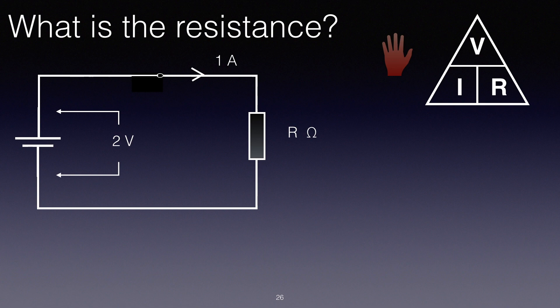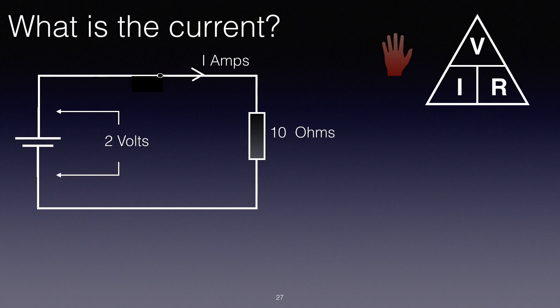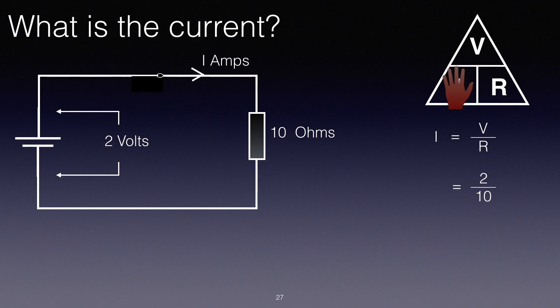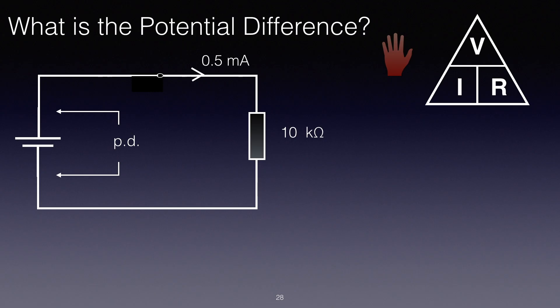So let's have a look at another one. What is the current? Well here we know we've got 2 volts and 10 ohms. Let's see what the current is. I equals V over R. It's 2 over 10 is 0.2 amps. And this is simply repeating what we did before.